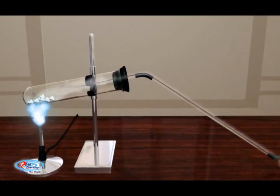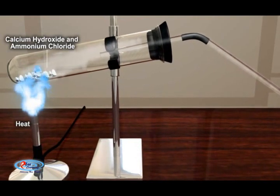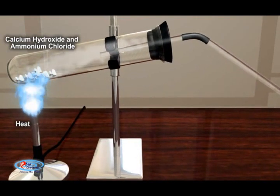The tube in which ammonia is generated is fixed in a slanting position to prevent the water formed from running back and cracking the whole tube. It is lighter than air.